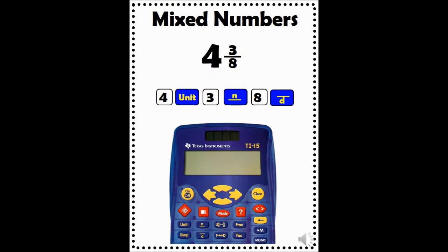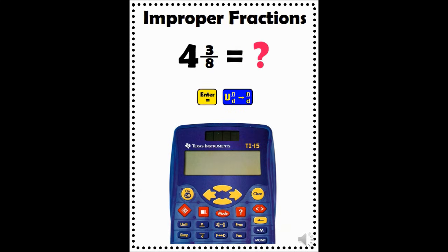Let's take a look at mixed numbers. To enter the mixed number four and three-eighths, press four, unit, and then enter the fraction three-eighths — three numerator, eight denominator. Another handy button on the TI-15 turns improper fractions into mixed numbers and mixed numbers into improper fractions. Enter the mixed number four and three-eighths into your calculator by pressing four, unit, three numerator, eight denominator. Press the equal or enter sign to move the number to the right side of your display. Then press the button directly under mode. This changes your mixed number into an improper fraction. Press it again and your improper fraction is changed back to a mixed number.